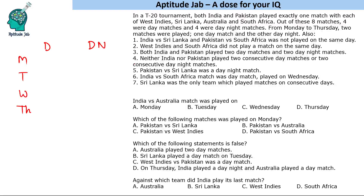Now let us look at the conditions. The first statement says India versus Sri Lanka and Pakistan versus South Africa were not played on the same day. Since this is a negative sentence, we get no direct hint from it, so we skip such negative statements initially. An important condition: both India and Pakistan played two day matches and two day-night matches.